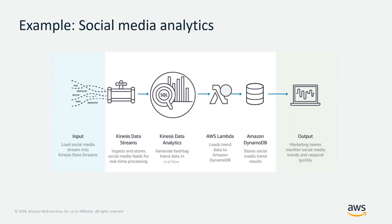Let's walk through an end-to-end example of real-time analytics in a streaming context. Imagine loading a social media stream from Kinesis Data Stream. The Kinesis Data Stream ingests and durably stores the data, making it available for real-time processing. A Kinesis Data Analytics consumer — or Apache Spark Streaming — can generate hashtag trends in real-time. You might use an AWS Lambda function to take that SQL result and write it to a DynamoDB table, updating a specific item which then feeds a real-time dashboard. All of these integrations are seamless and easy to build.